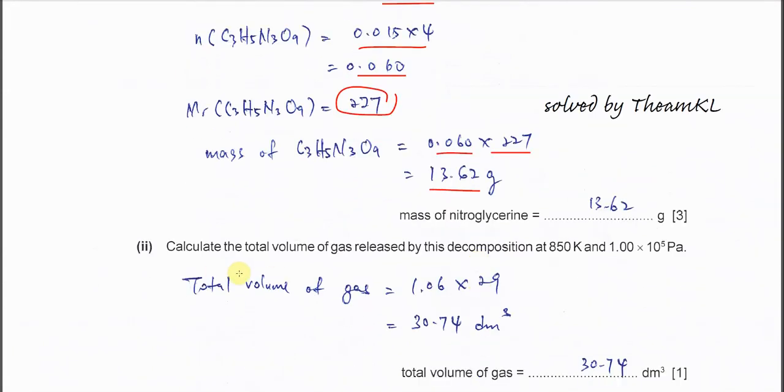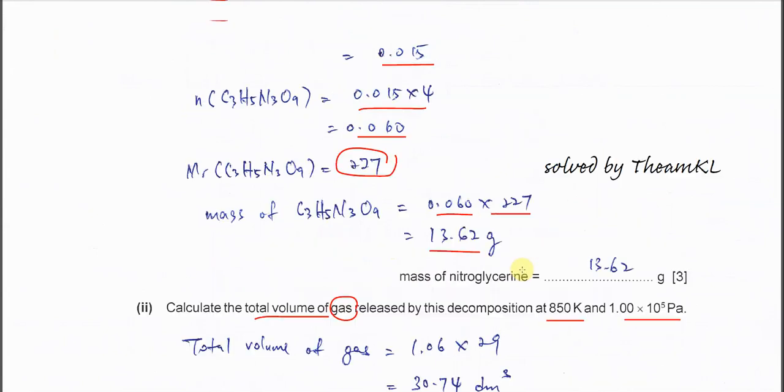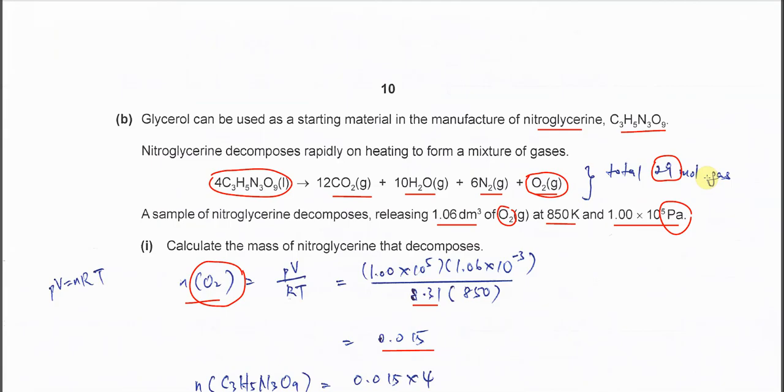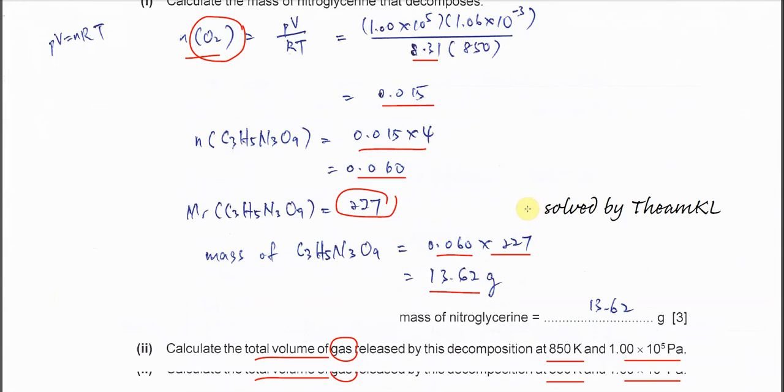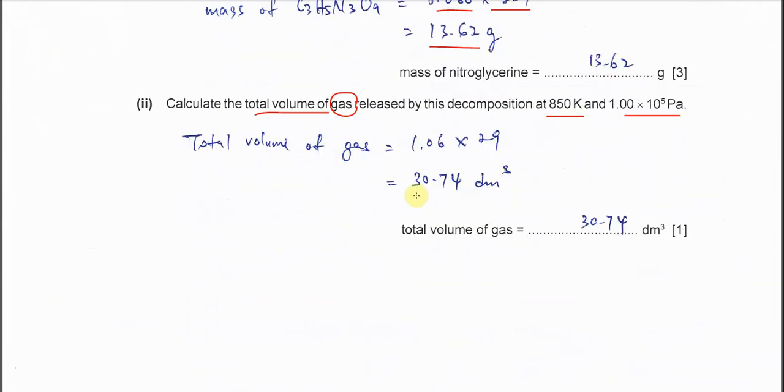For part 2: Calculate the total volume of gas released by this decomposition at this temperature and pressure. Very easy because we know that total gas mole is 29 and oxygen already released 1.06 - this is 1 mole only. 1 mole released this volume, 29 moles must be 29 times. So therefore it's 30.74.